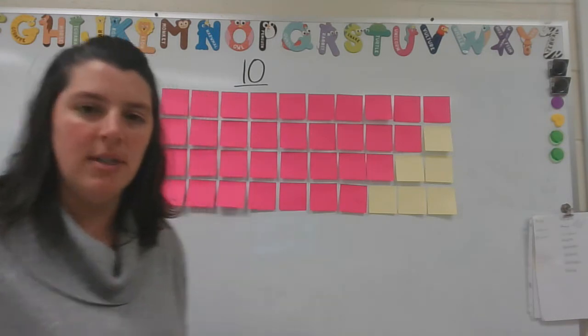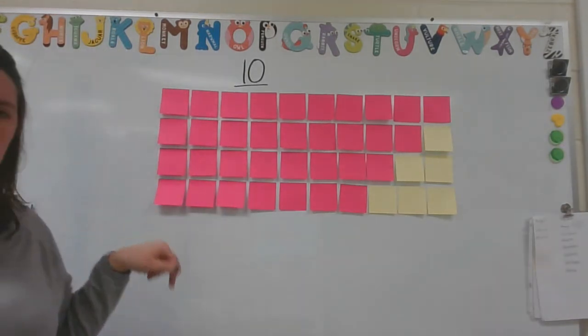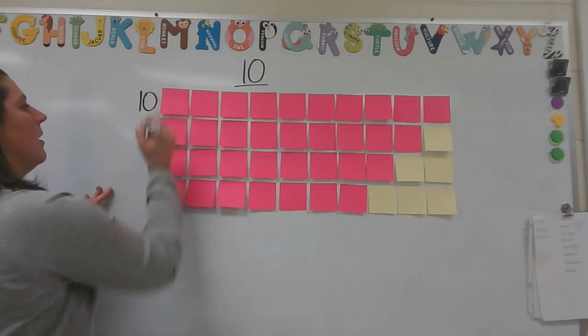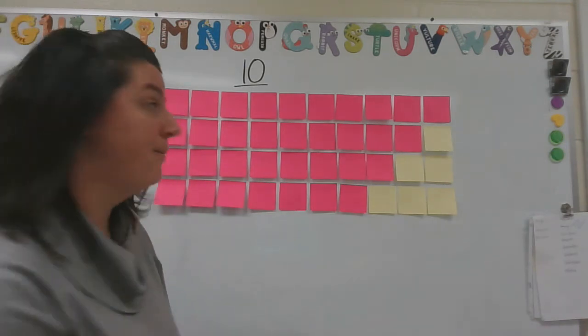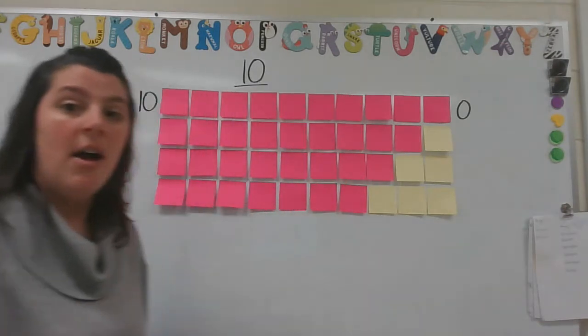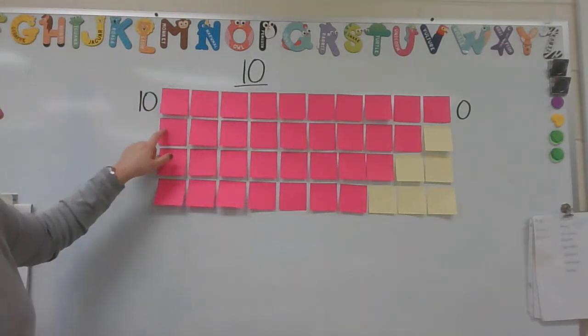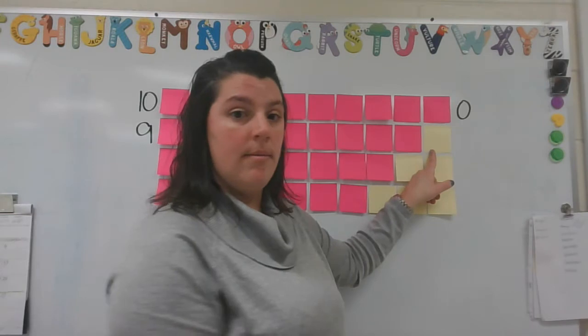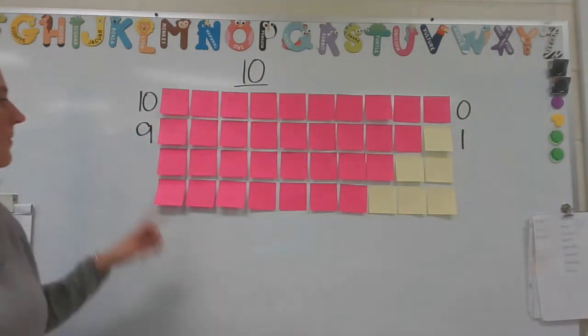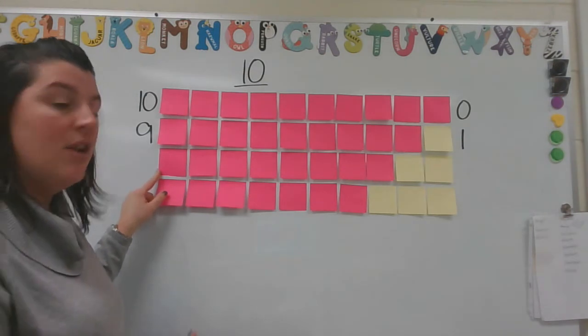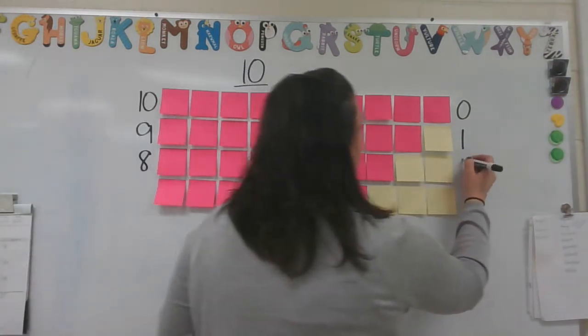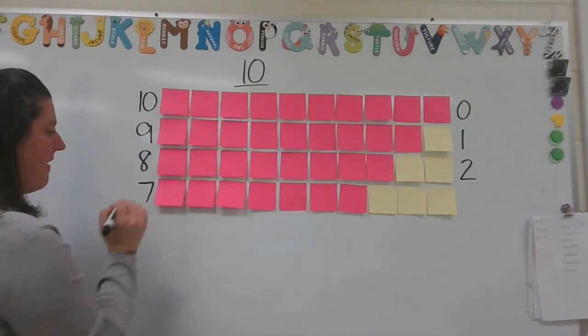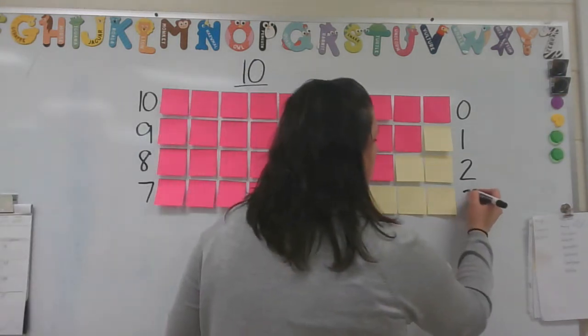I want to go back and I'm going to write some numbers. So over here, I'm going to write how many pink ones there are. In the top row, how many pink ones were there? There were 10. You got it. Were there any yellow sticky notes? No. So I'm going to write the number 0 here. In the second row, how many pink sticky notes were there? There were 9. How many yellow? 1. Now, what about the next row? There were 8 pink and 2 yellow. Then the last one we did, there were 7 pink and 3 yellow.